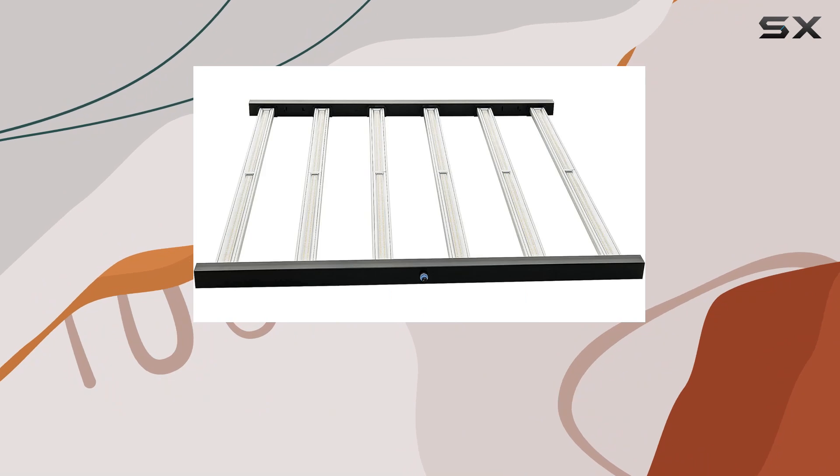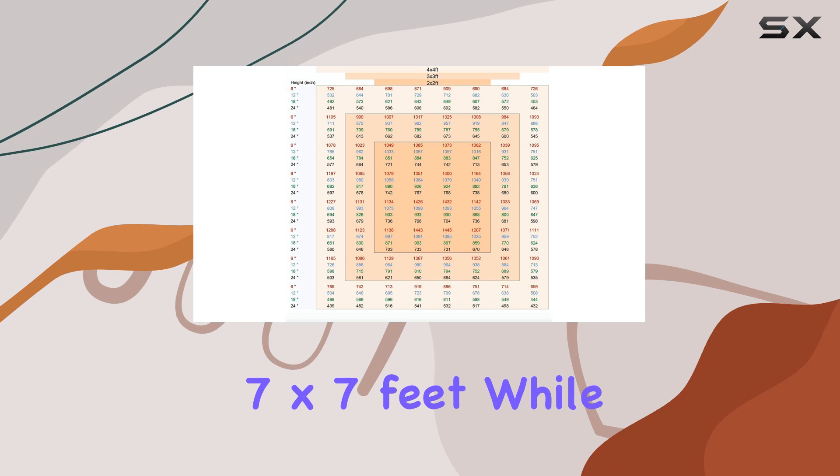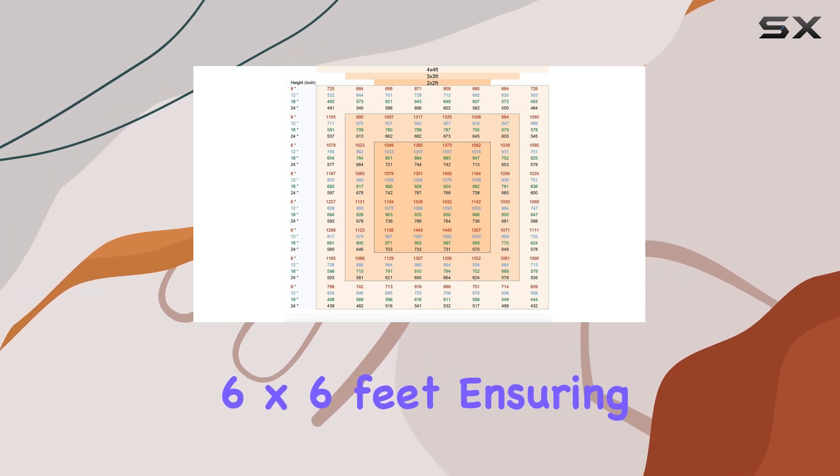Whether you're using grow tents, commercial grow rooms, hydroponics, or vertical farms, the veg footprint covers an impressive 7x7 feet, while the flowering footprint covers 6x6 feet, ensuring broad and effective light distribution.